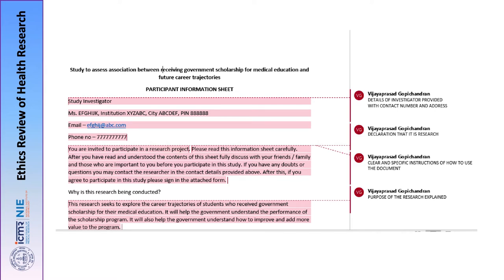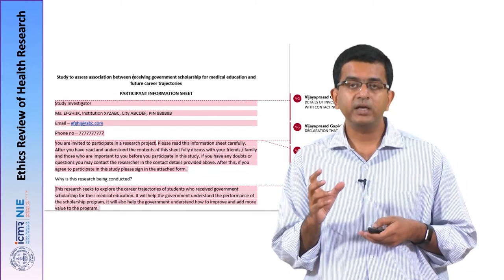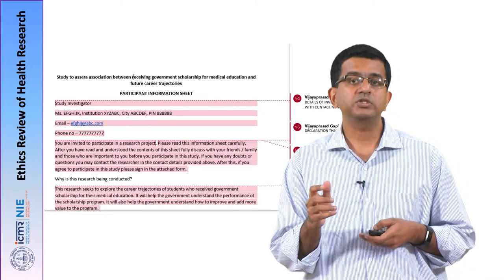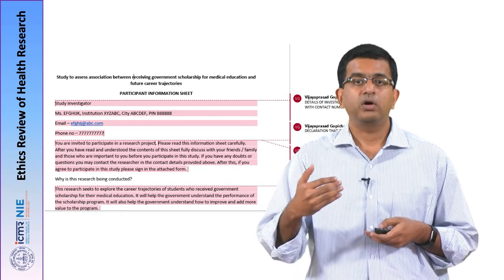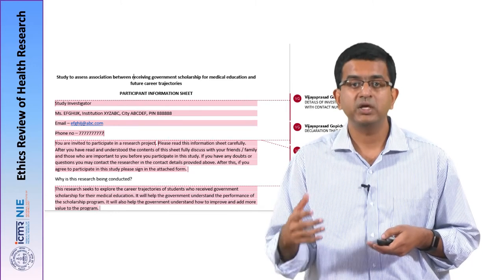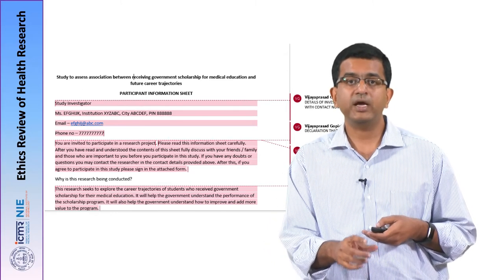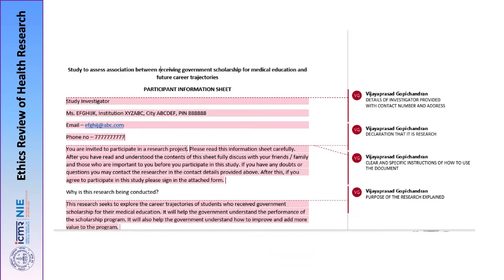There is a clear declaration that this is a research study — the first statement of the document says you are invited to participate in this research project. Then the first paragraph of the informed consent form very clearly explains how to use the information sheet, what information is provided, how they should read and engage with it, how they can ask questions. The instructions on how this information sheet is to be used are provided very clearly.